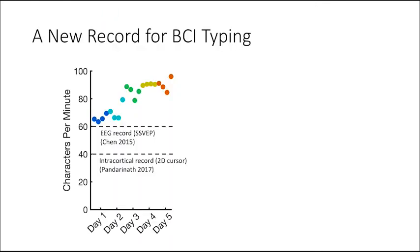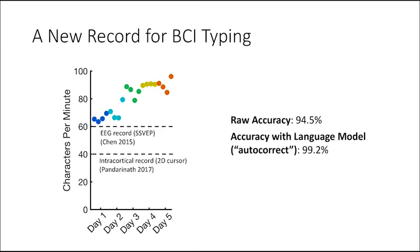To our knowledge, the typing rates we achieved set a new record for BCIs of any kind. After five days of practice, our participant could type at 90 characters per minute at high accuracies. The raw accuracy achieved in real-time was 94.5%. When we used a general-purpose language model to simulate autocorrection, the accuracy was above 99%.